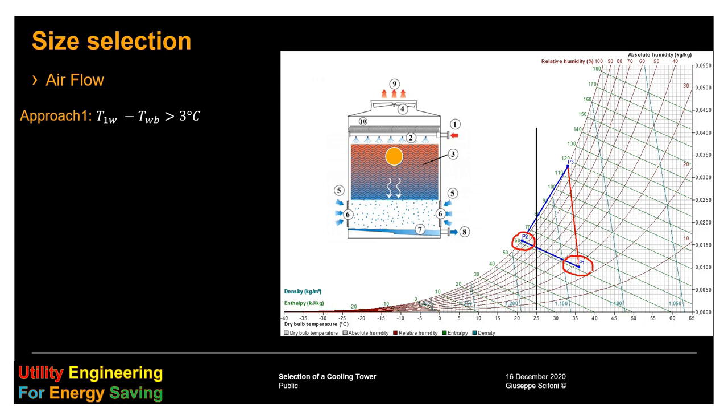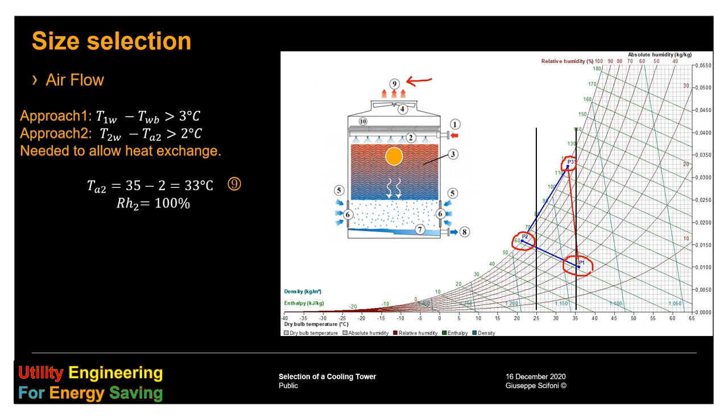The first approach is that the temperature of the leaving water must be at least three degrees higher than the wet bulb, otherwise the heat transfer is not possible. Then we have a second approach saying that the leaving condition of the air, so the point P3, must be two degrees at least lower than the entry temperature of the water, this vertical line and the position nine in this picture. Of course, this condition says that the air is saturated, so 100%.